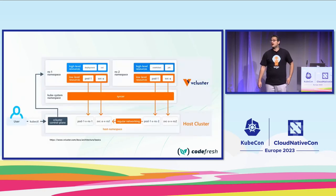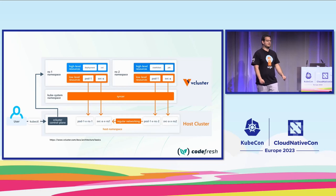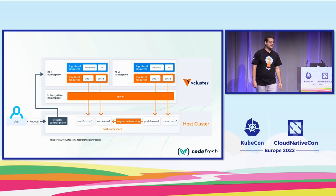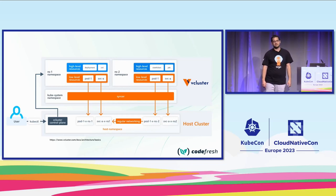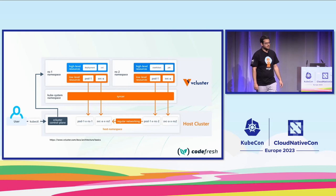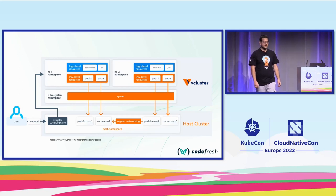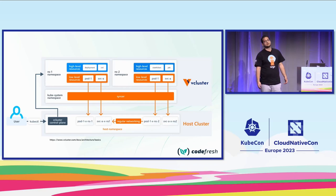This is how vClusters operate. The vCluster pod has two containers: one is the vCluster itself representing the Kubernetes API, and the other is the syncer container, responsible for syncing API objects from the vCluster onto the host cluster. By default it syncs only the absolutely necessary resources like secrets, config maps, and pods — but you can configure it to sync any other resource you want, for example ingresses if you want vCluster workloads to be accessed from outside.